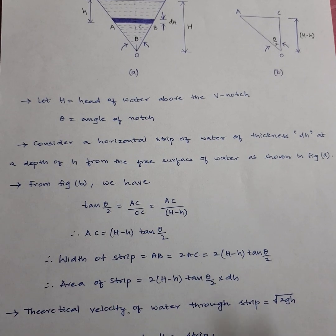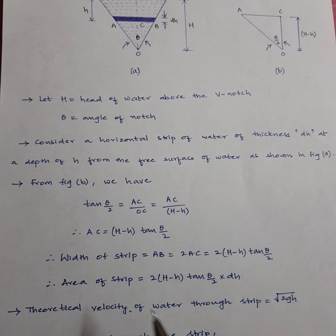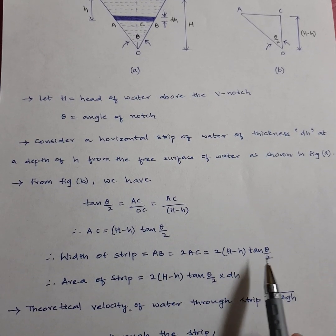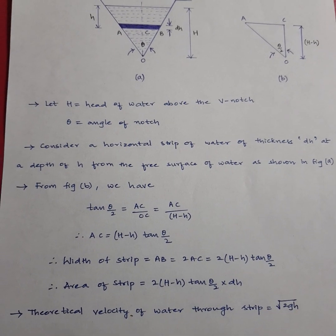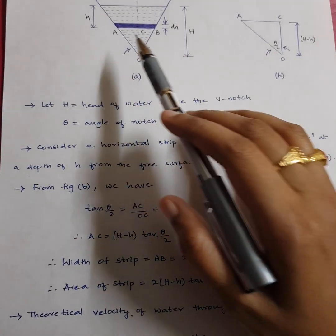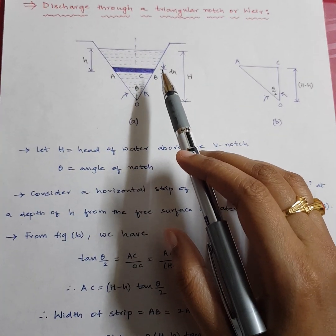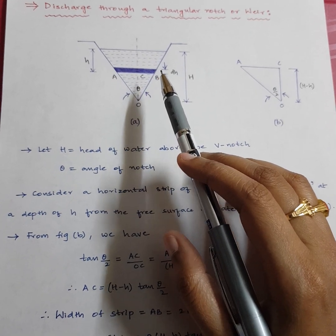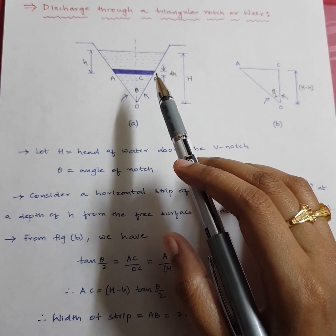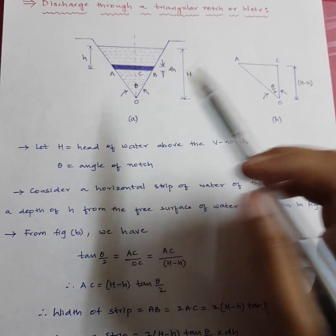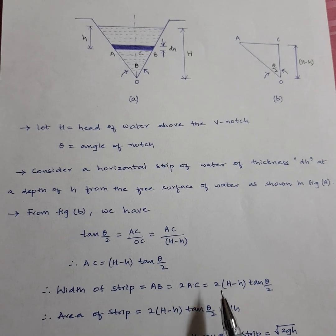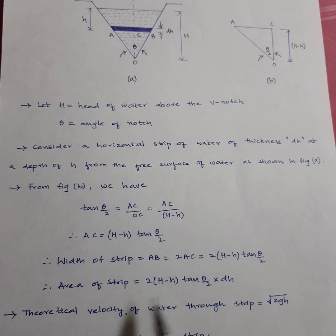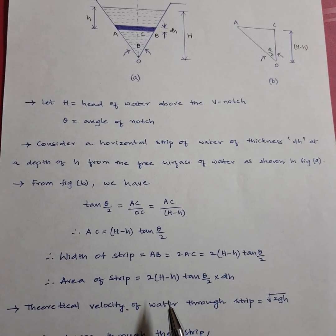Width of the strip AB equals 2(H − h)tan(theta/2). Even though the elementary strip is slightly trapezoidal in shape, for easy calculation we assume it is rectangular. Therefore, the area of the elementary strip equals width times thickness, which is 2(H − h)tan(theta/2) × dH.